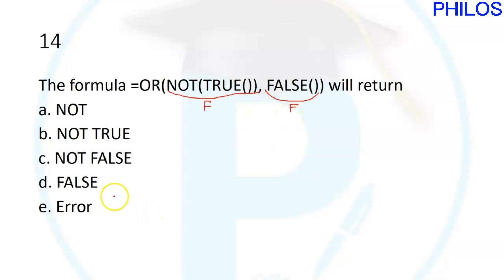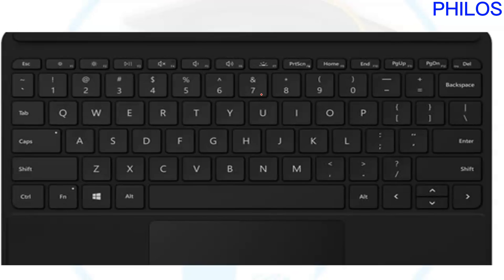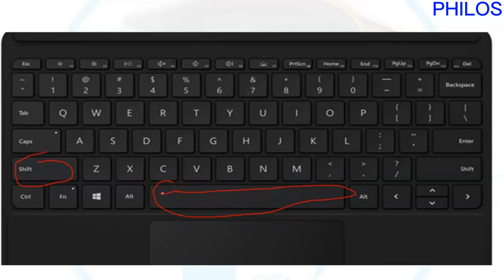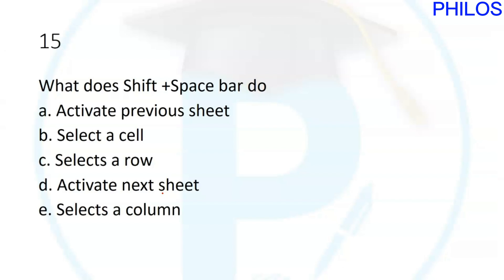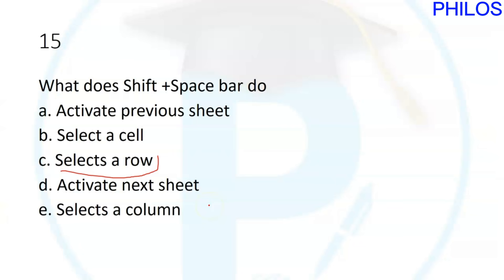Question fifteen: what does Shift+Space Bar do? When you click Shift and the Space Bar together, it selects an entire row. The correct answer to question fifteen is C: select a row. If you click Control+Space Bar, that selects an entire column.